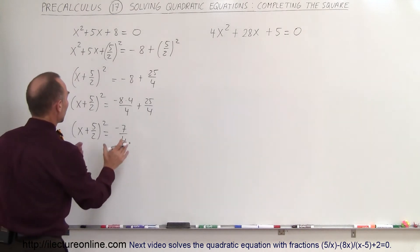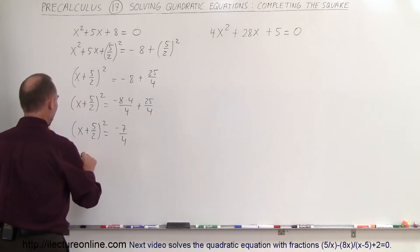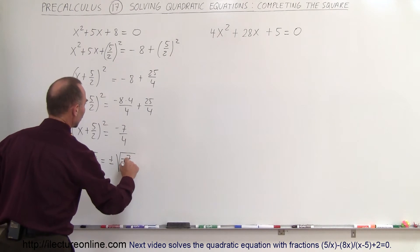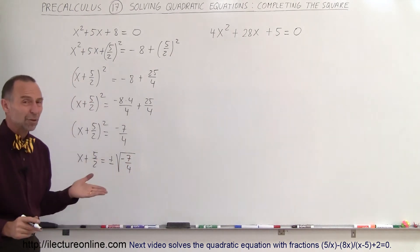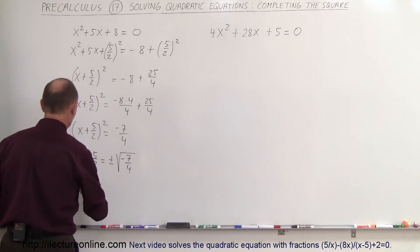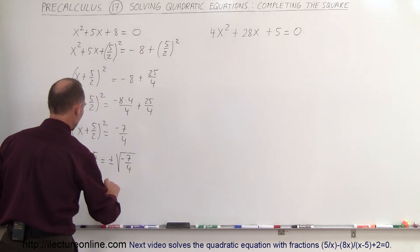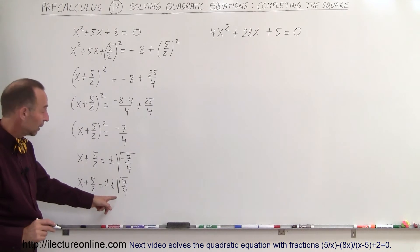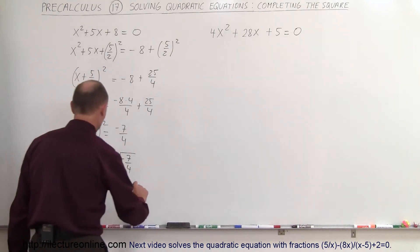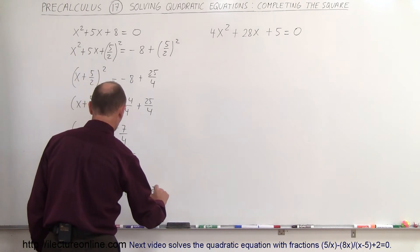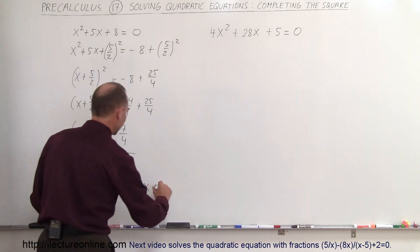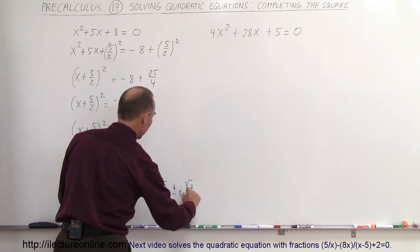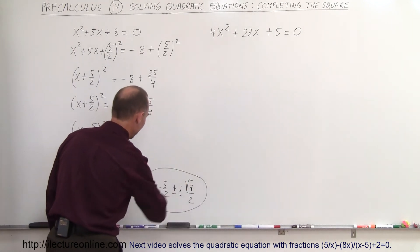Now we take the square root of both sides. We get x + 5/2 = ±√(-7/4). Notice we have the square root of a negative number, which is an imaginary number. So this can be written as x + 5/2 = ±i√(7/4). In the denominator we have √4 = 2, so this becomes x = -5/2 ± i√7/2.